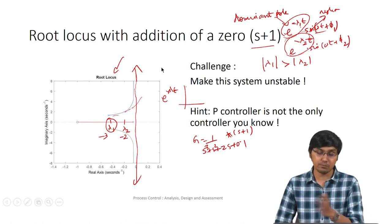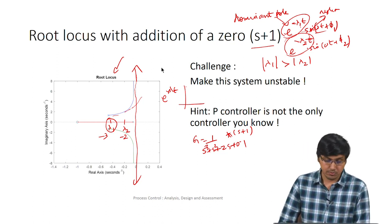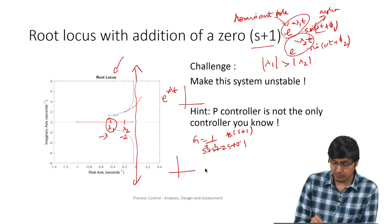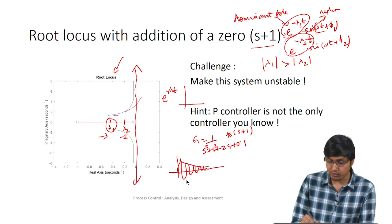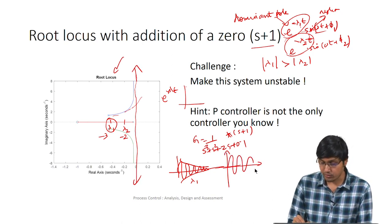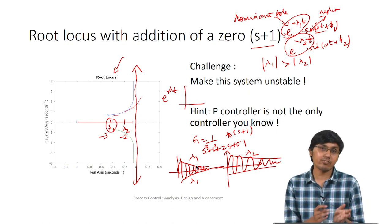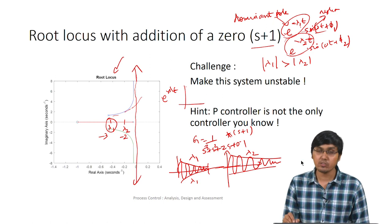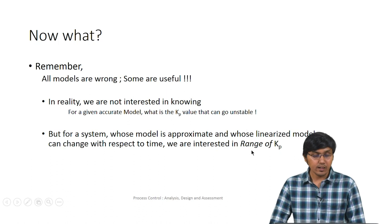Both poles are stable (left half-plane) so both decay to zero. But λ₁ decays faster while λ₂ takes longer to reach zero. Lambda 2 is therefore more significant — it is the dominant pole. So poles closer to the imaginary axis are called dominant poles. You can verify this by plotting both exponential terms in MATLAB for specific values.